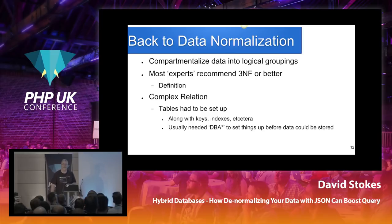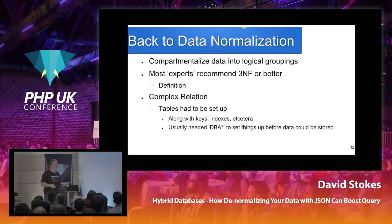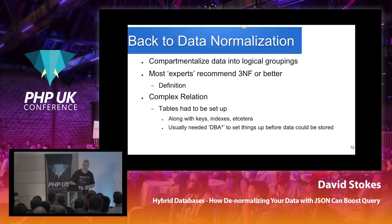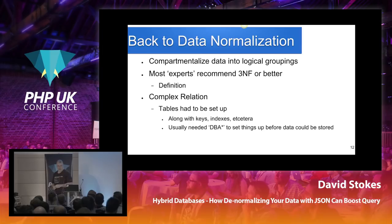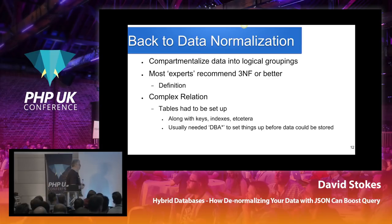Most people from database companies were telling you to go out and normalize your data. Experts have been preaching this for upwards of 40 years — telling you to package your data properly and set up complex relations with your tables. Usually this requires a DBA to come in, set up the relations, tables, indexes, and give you permissions to write to the data. You had to go through the DBA as a choke point.